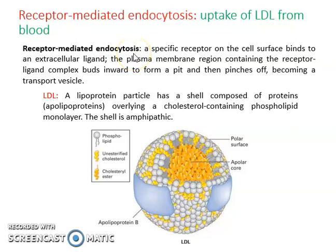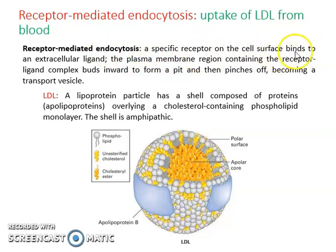As the name suggests, receptor-mediated endocytosis is endocytosis mediated by a specific receptor. Endocytosis is a process in which a cell takes up materials from its surrounding outside environment and transfers them into the cell. Here, a specific receptor on the cell surface binds to an extracellular ligand.